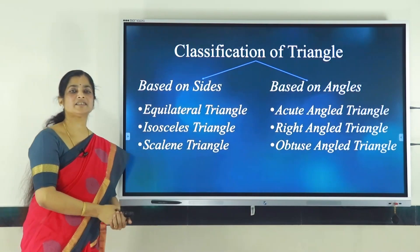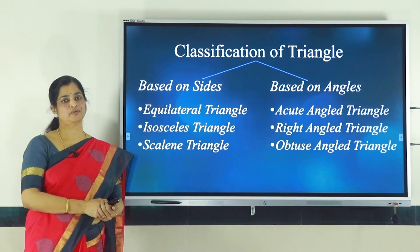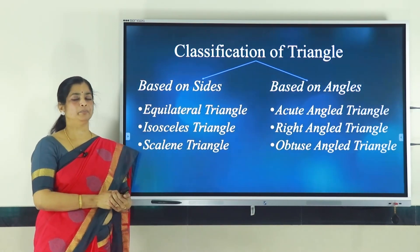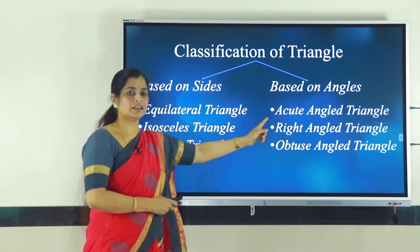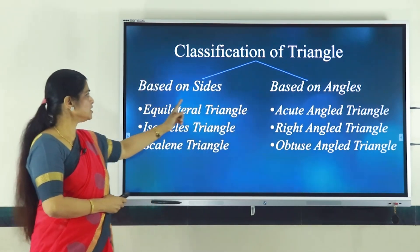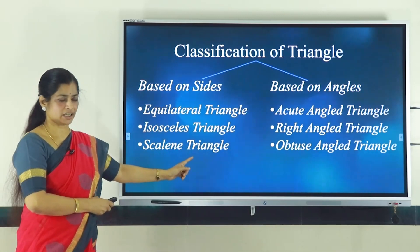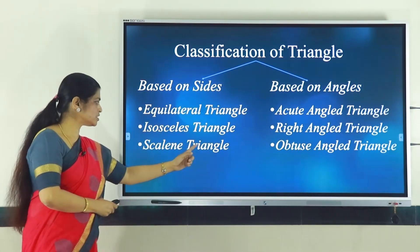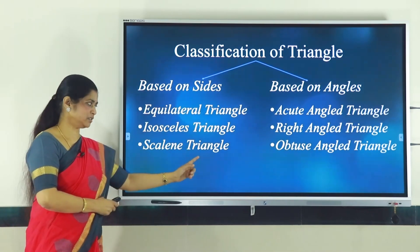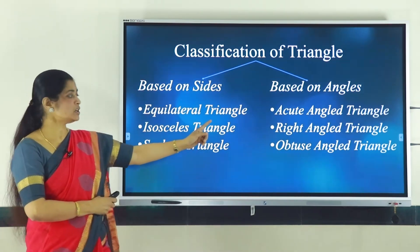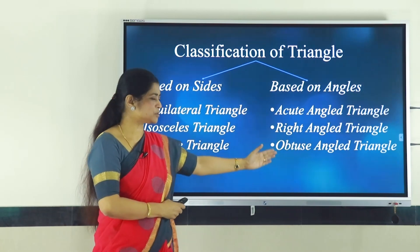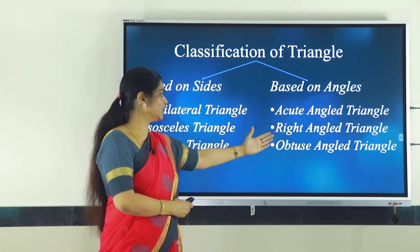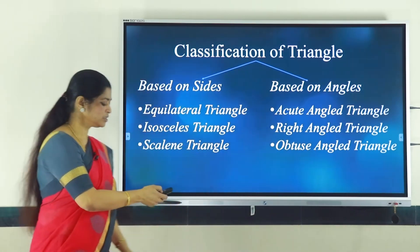Next, let us learn about the classification of triangles. Triangles are classified depending on their sides and angles. Based on the sides, you have three types: equilateral triangle, isosceles triangle and scalene triangle. Based on angles, you have another three types: acute angle triangle, right angle triangle and obtuse angle triangle.